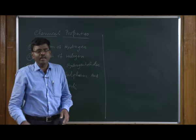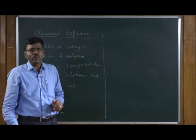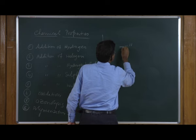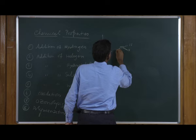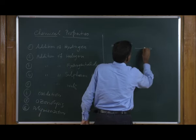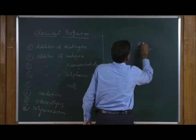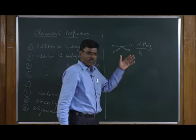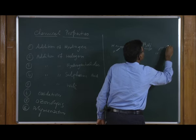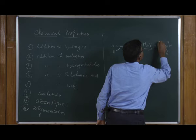As we have seen, alkenes can readily be converted into alkanes using one equivalent of hydrogen. For example, if we treat ethylene with one molecule of hydrogen in the presence of a catalyst like palladium, platinum, or nickel, the hydrogen undergoes addition to the alkene and you get the alkane.